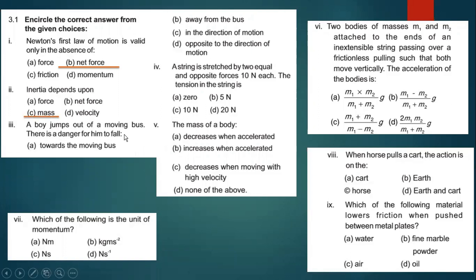Part three: a boy jumps out of a moving bus, there is a danger for him to fall — option C is the right answer — in the direction of motion. This is because his motion continues in the direction of the bus's motion due to inertia.